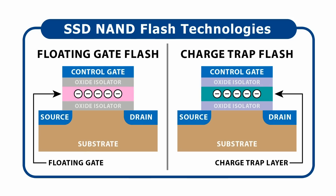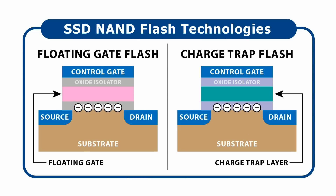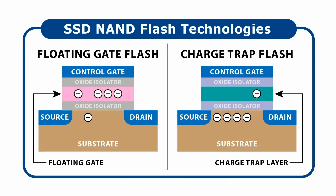To erase a cell, a voltage is applied to remove the electrons from the floating gate or charge trap layer. However, repeated program-erase operations weaken the material a cell is made from, which results in electrons either escaping a floating gate or being retained in a charge trap layer. After a certain number of program-erase, or PE cycles, it therefore becomes impossible for the cell to reliably function.